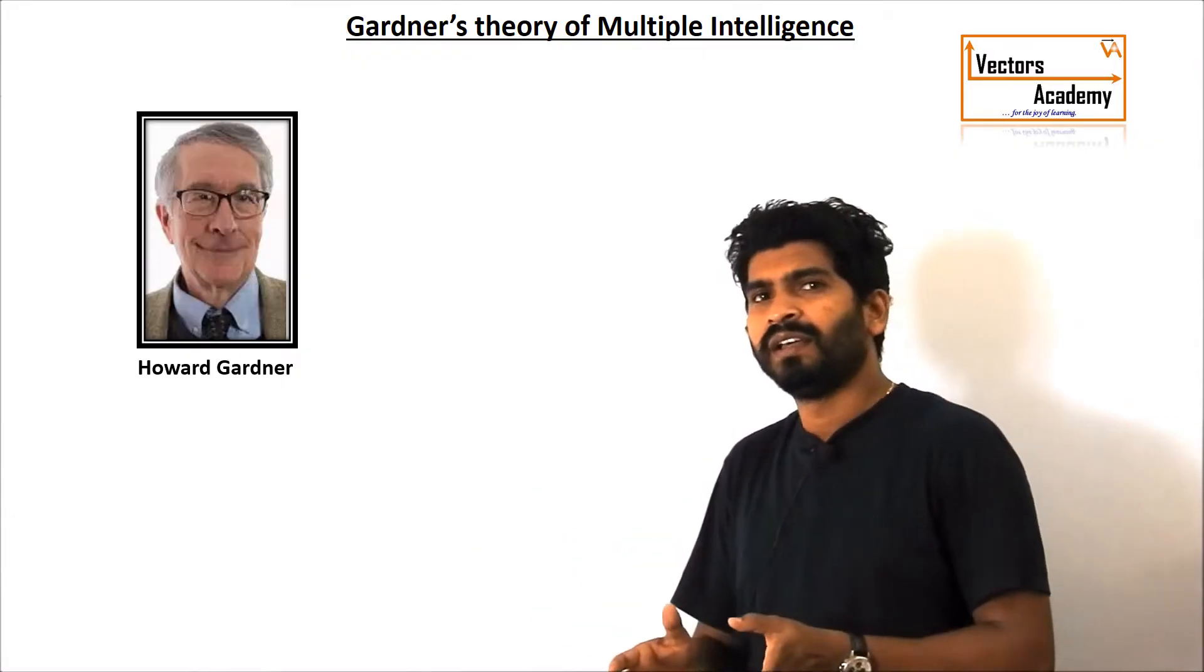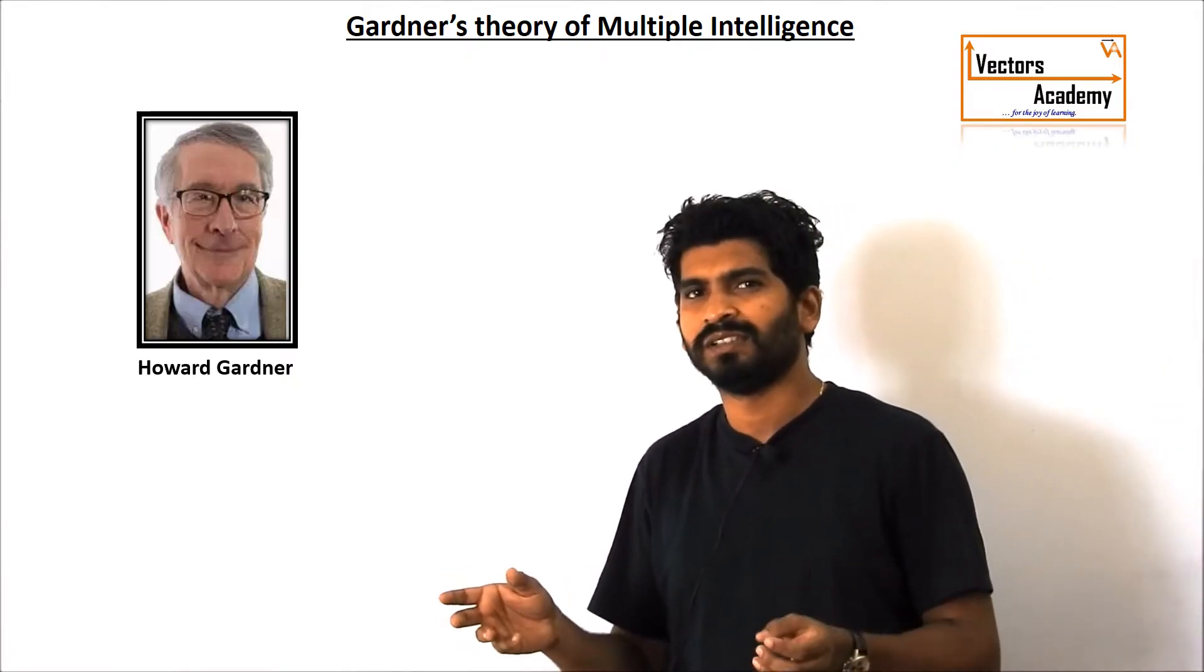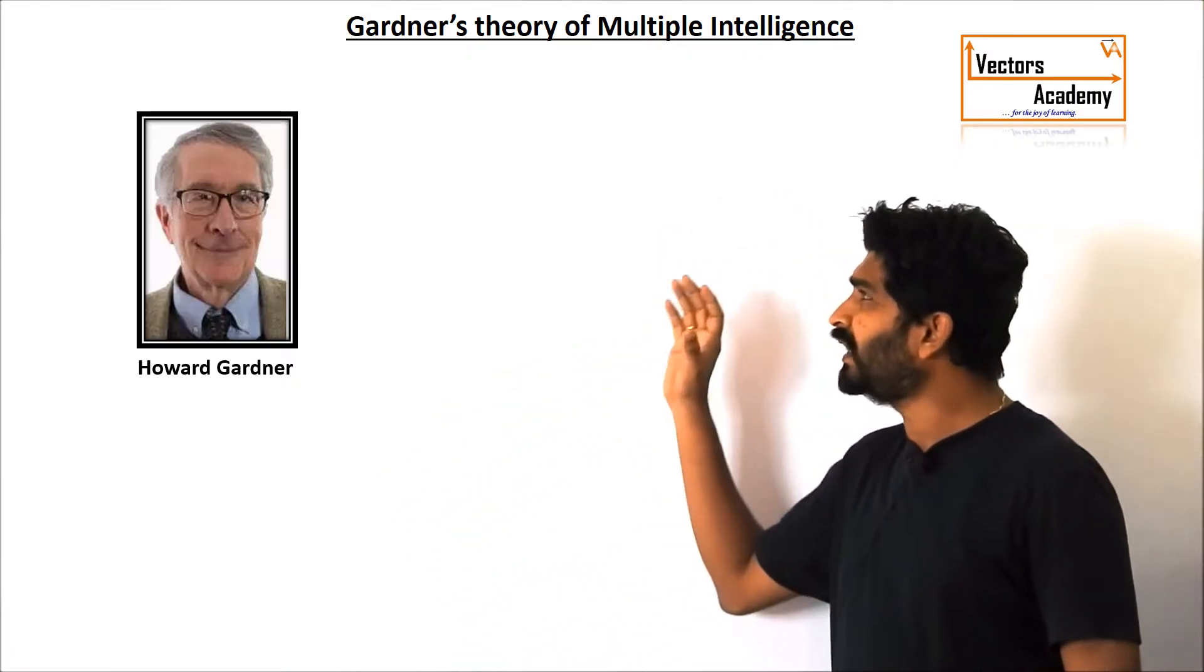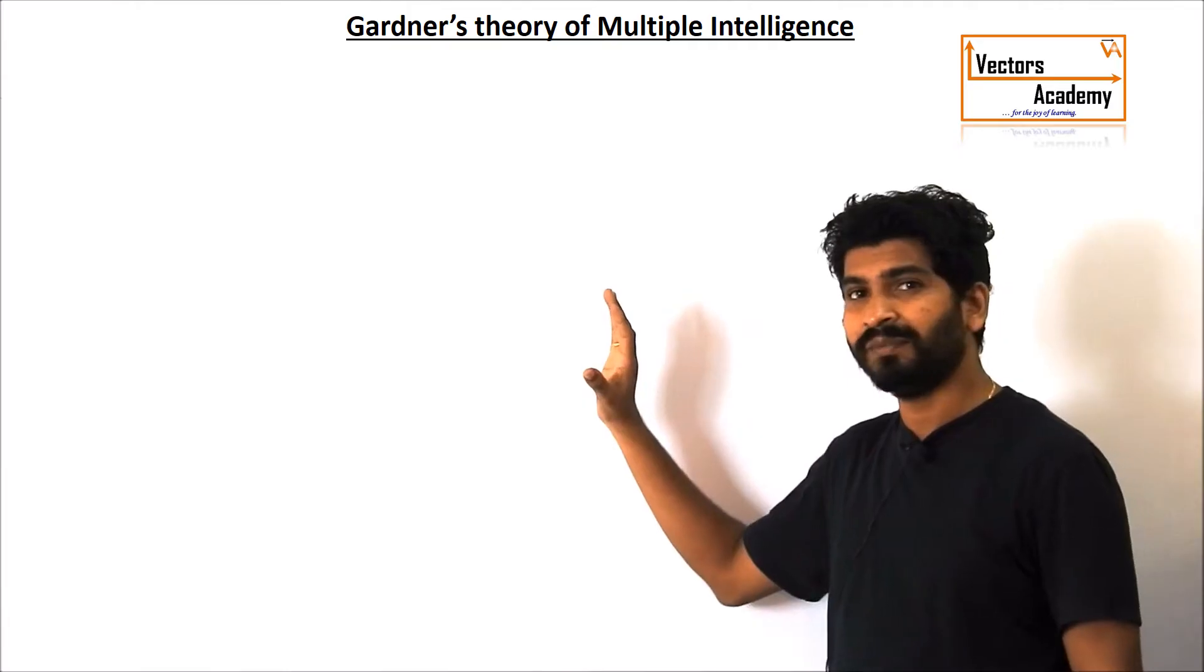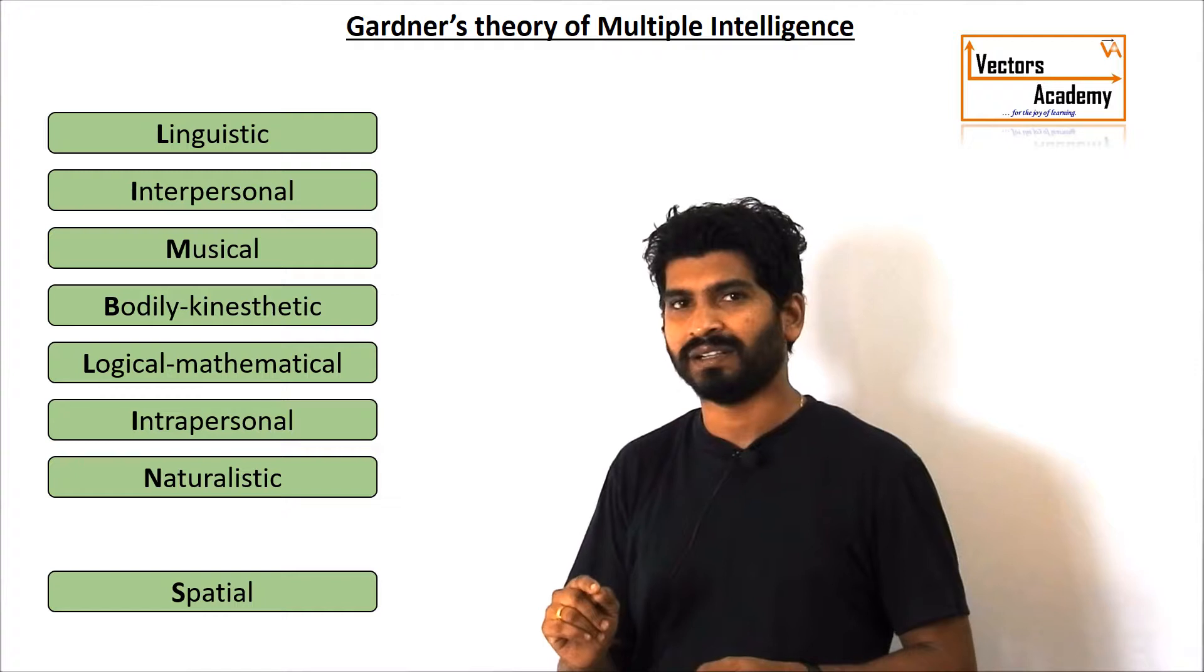So what he did, he decided to define intelligence in a very broad sense. So in 1999 he came up with his own theory that was intelligence cannot be defined as one single aspect.